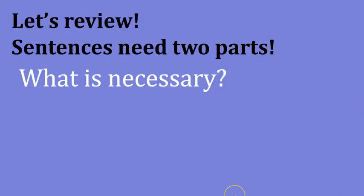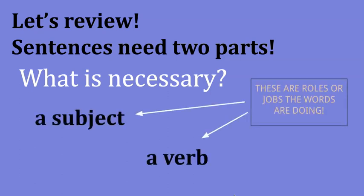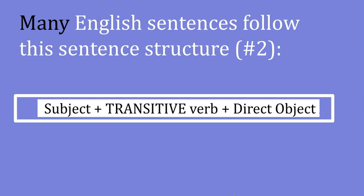Before we get started, we need to understand that all sentences need two parts. What is necessary? A subject and a verb. We need all sentences to have subjects and verbs. The verb is very important in a sentence because it tells us what to add after. The verb helps us understand the syntax — subject, transitive verb, and direct object.